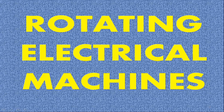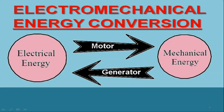Before discussing lots of things about rotating electrical machines, we must understand the meaning of the term electrical machine. An electrical machine is a device that is used to convert either mechanical energy into electrical energy or electrical energy into mechanical energy, and this process is widely termed as electromechanical energy conversion. The electrical machine which converts mechanical energy into electrical energy is called a generator, and that which converts electrical energy into mechanical energy is called a motor.